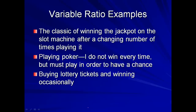Variable ratio examples: as Skinner pointed out, if you want to see a variable ratio operating with humans, just go to Las Vegas or Atlantic City. The classic example is winning the jackpot on a slot machine after a changing number of plays. You have to keep playing to win, but you never know when you're going to win — so you keep playing and playing. Every once in a while they'll throw you a few nickels or quarters, but you just never know.